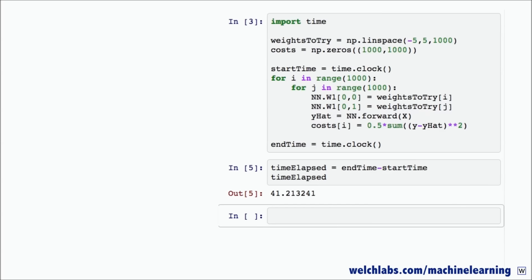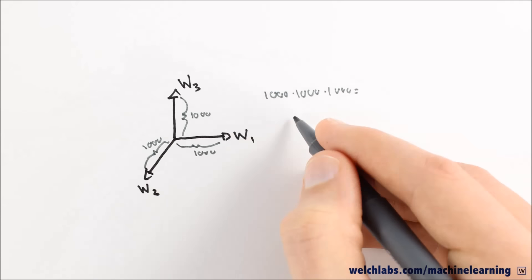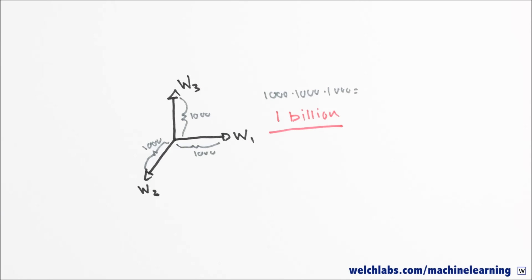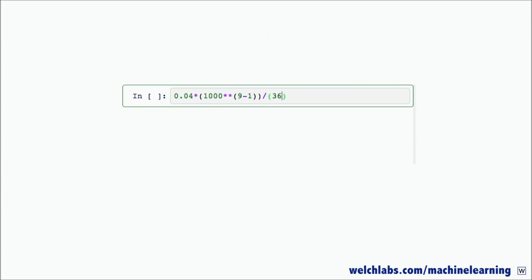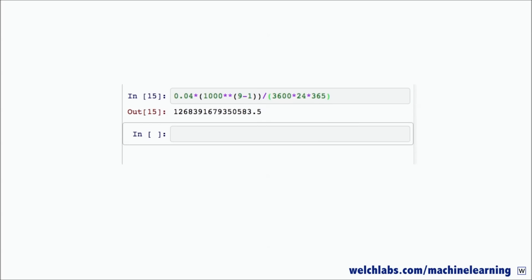The real curse of dimensionality kicks in as we continue to add dimensions. Searching through three weights would take a billion evaluations, or 11 hours. Searching through all nine weights we need for our simple neural network would take 1,268,391,679,350,583.5 years. For that reason, the just try everything or brute force optimization method is clearly not going to work.